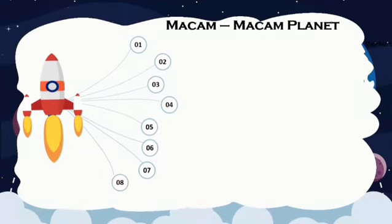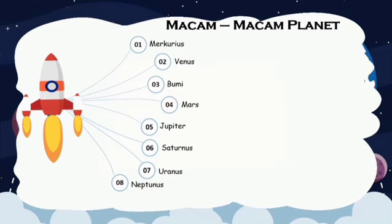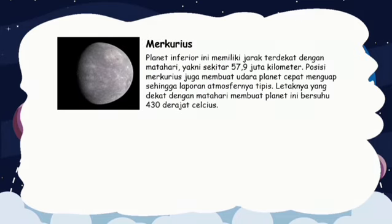Macam-macam planet. 1. Merkurius. Merkurius memiliki jarak terdekat dengan matahari, yakni sekitar 57,9 juta kilometer. Posisi Merkurius juga membuat udara planet cepat menguap, sehingga lapisan atmosfernya tipis. Letaknya yang dekat dengan matahari membuat planet ini bersuhu 430 derajat Celsius.